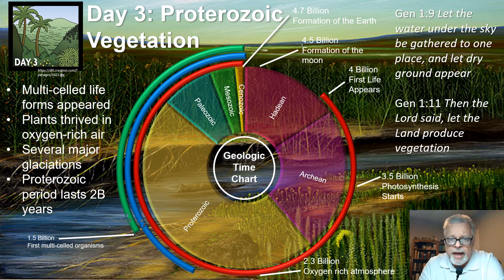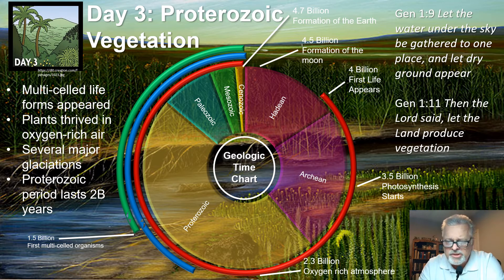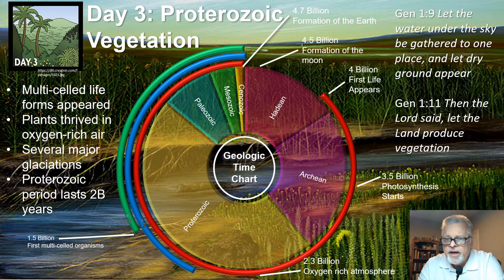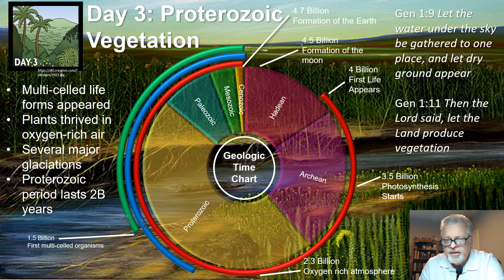In the Bible, day three corresponds to science's Proterozoic period, which was about as long as the Hadean and Archean periods combined, and then some — an extremely long period of time. What was happening on Earth during the Proterozoic period is that multi-celled life forms began to appear, and plants thrived because of all the oxygen being created. God said, let the water under the sky be gathered and let dry ground appear, then let the land produce vegetation. When you think of Proterozoic, think of vegetation — nothing moving around, nothing alive except plant life, putting oxygen in the sky on day three.